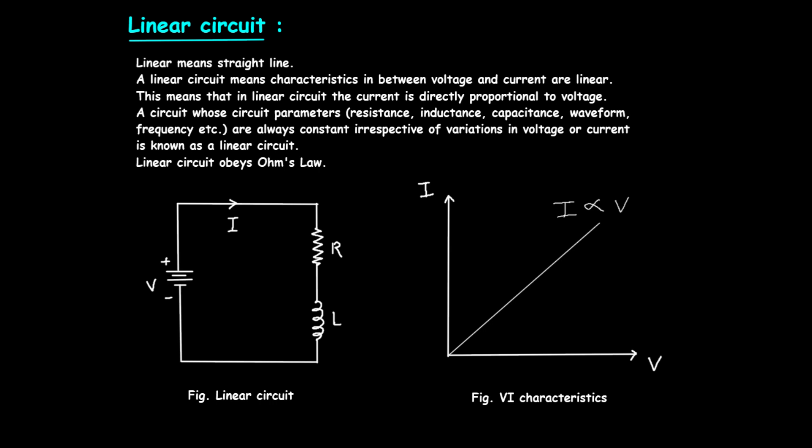Let's take a closer look at the V-I characteristics of a linear circuit. On the graph, the horizontal axis represents the voltage, V, and the vertical axis represents the current, I. Since the current is directly proportional to the voltage, the graph is a straight line passing through the origin. The slope of this line is determined by the resistance, R, in the circuit. A steeper slope indicates lower resistance, while a flatter slope indicates higher resistance.